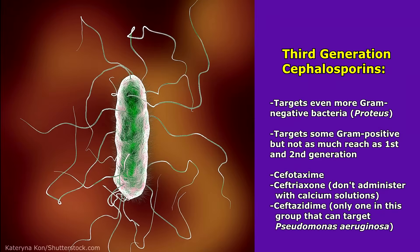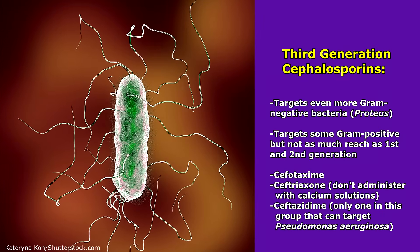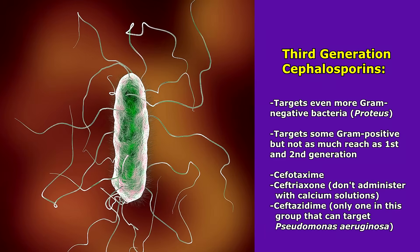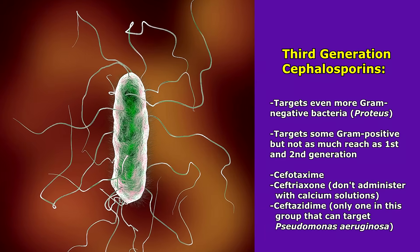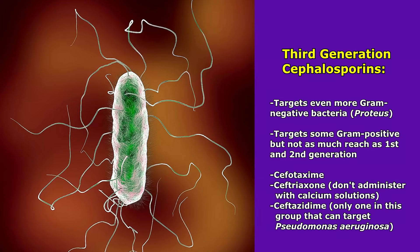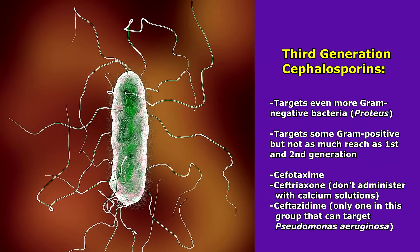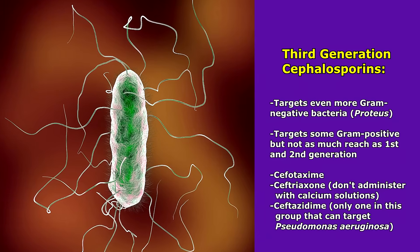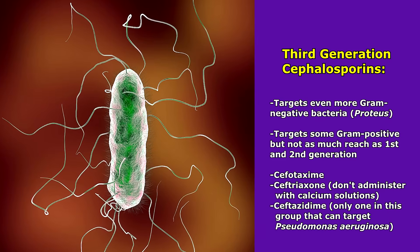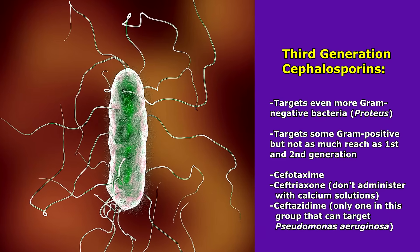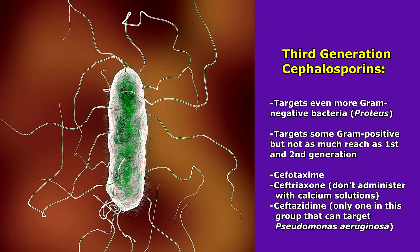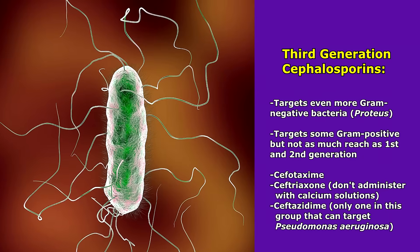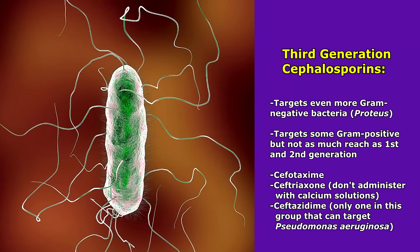Next up is the third generation of cephalosporins. This generation goes after even more gram-negative bacteria like Proteus and some gram-positive, but it does not have as much reach as the first and second generation. Medications in this generation include cefotaxime and ceftriaxone — and what you want to remember about ceftriaxone is that you don't want to administer it with calcium solutions because it could cause calcium precipitation. Another one is ceftazidime, which is the only one in the group that actually targets Pseudomonas aeruginosa.